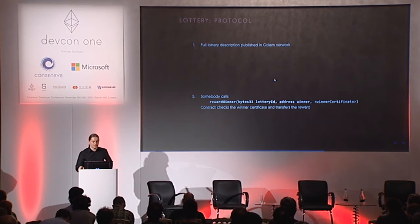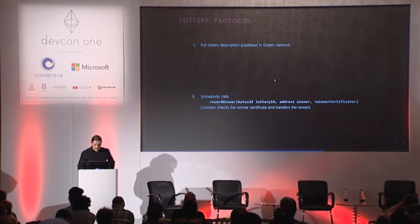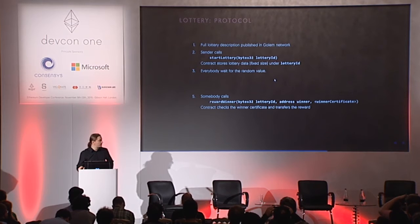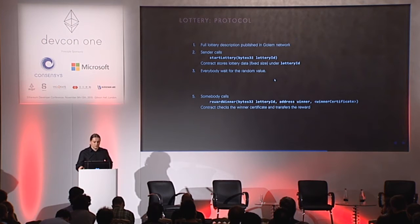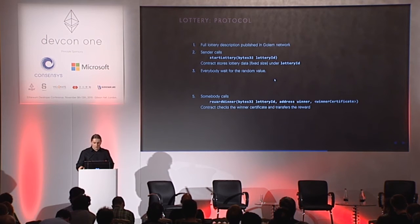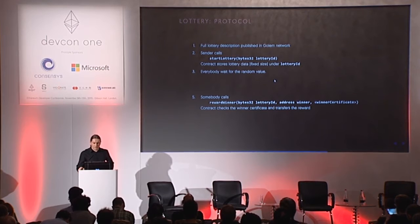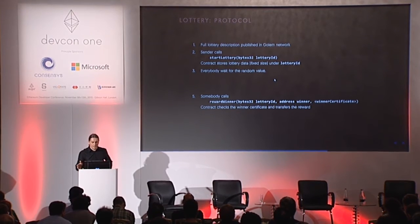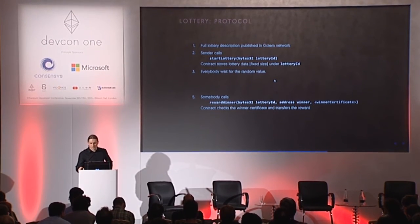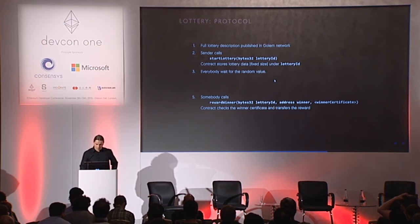Unfortunately we don't know how to do this because there is no trusted source of randomness. But if we could draw a random number from some external source that can be checked later on, then the sender would call start-lottery with a lottery ID — which maps uniquely to the description of the lottery and the ID of the task sent to the Golem network. After the random number is generated, someone — maybe the sender or the winner — calls reward-winner, and the funds are transferred to the winning node. This is still infeasible and we have to come up with something else.